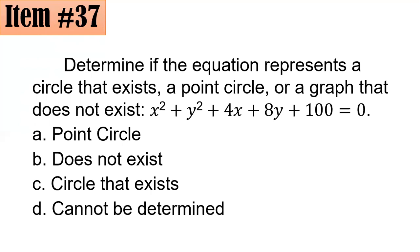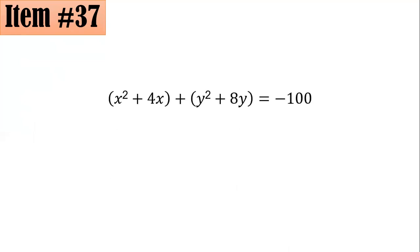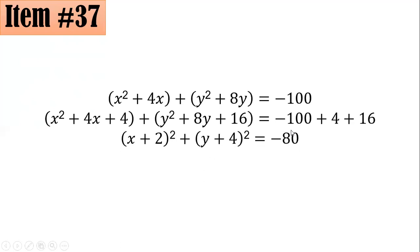The technique is expressing the equation in standard form. Completing the square again, grouping terms with the same variable. I will complete the square: 4 divided by 2, that's 2 squared, that's 4. Here, 8 divided by 2, that's 4 squared, that's 16. It becomes (x + 2)² + (y + 4)² = -80.